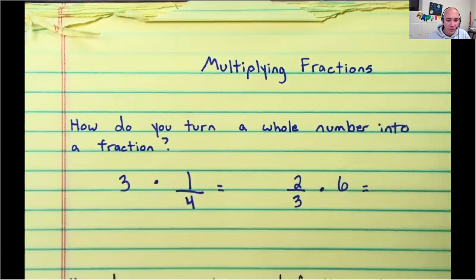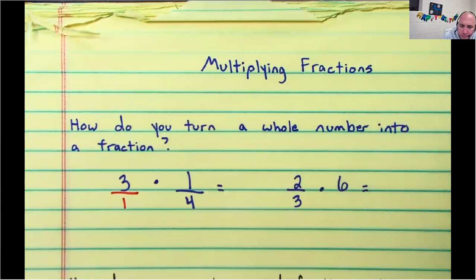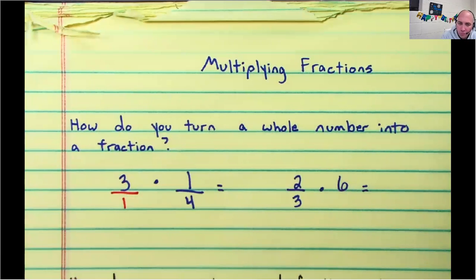Now, the first thing I'm going to ask you when multiplying fractions, how do you turn a whole number into a fraction? Well, easy. To turn a whole number into a fraction, you just put it over one. Isn't three over one just the same as three? Well, yes, it is. So we answered the first question. How do you turn a whole number into a fraction? You just put the whole number over one.